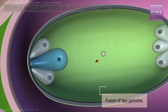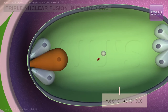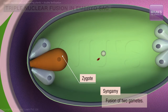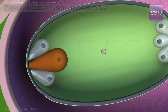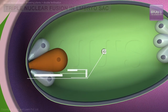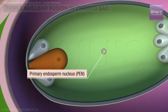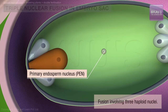One of the male gametes moves towards the egg and the other to the polar nuclei. Only one of the two sperms fuses with the egg, resulting in syngamy or true fertilization, which leads to the formation of a diploid zygote. The second male gamete fuses with the haploid polar nuclei to form a triploid cell, technically called the primary endosperm nucleus or PEN. As three haploid nuclei are involved in this fusion, this process is also termed triple fusion.